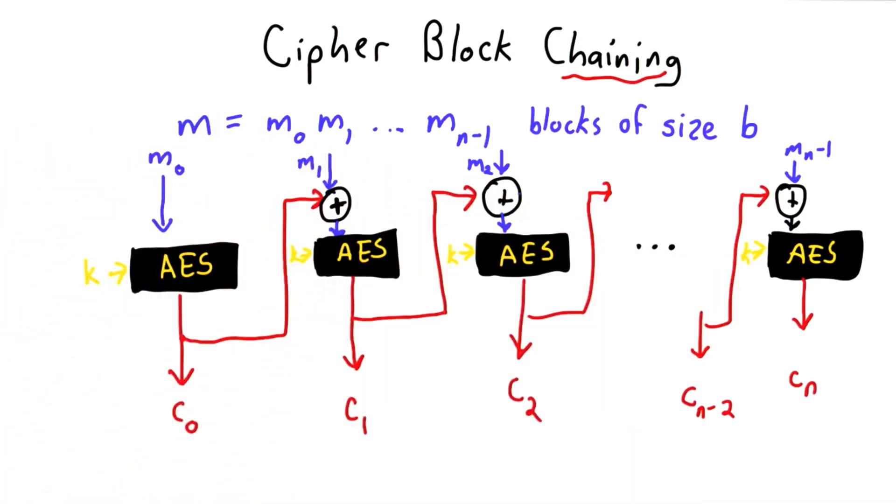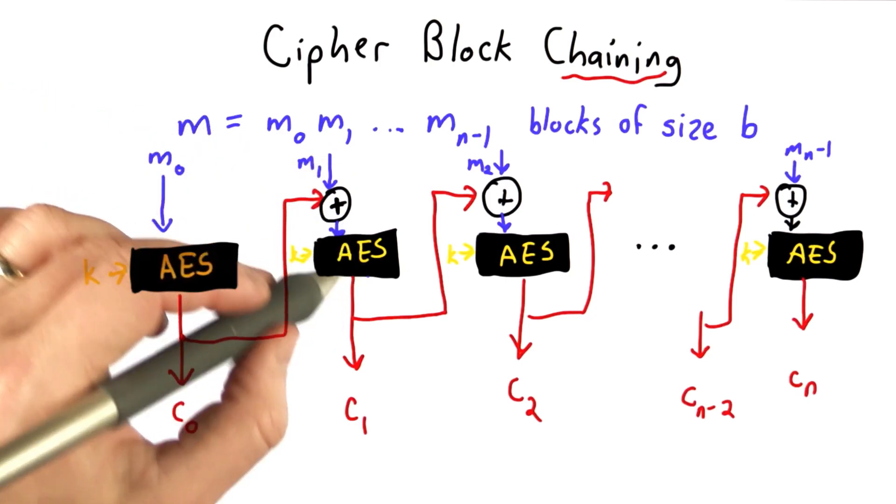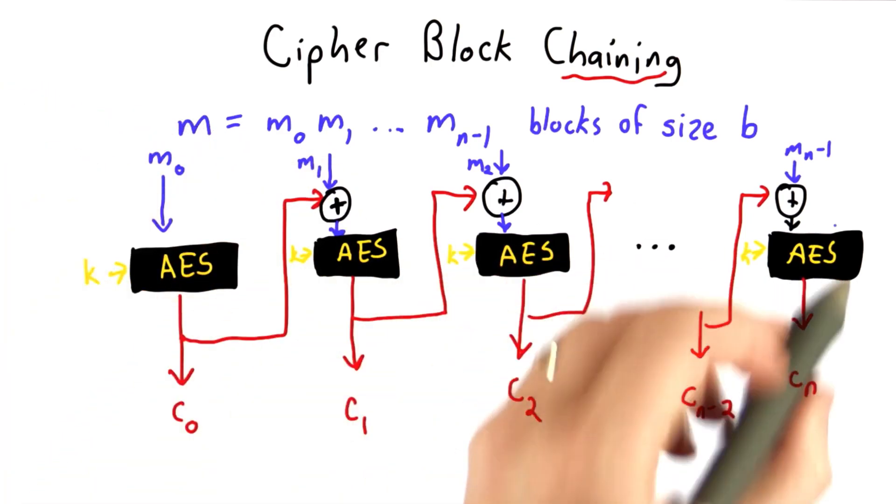Instead of doing each block independently though, and having the codebook property, for the second block we're going to take the cipher text that came out for the first block, XOR that with the message block, and then make that the input to our encryption function. So this keeps going.